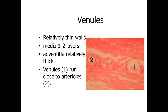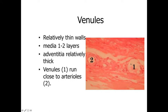Once blood has passed through the capillary beds, it enters the venous system to return to the heart. Here we can see an arteriole with simple squamous endothelium and maybe two or three layers of smooth muscle cells, alongside a venule. Arteries and veins generally run in close proximity. Venules have a much thinner wall — at most one or two layers of tunica media and a relatively prominent adventitia — with a larger diameter lumen because they're involved in storage and return of blood, giving a much wider lumen and thinner wall than the associated artery.